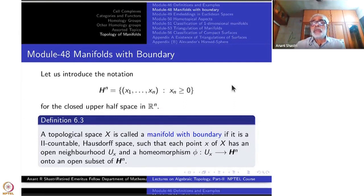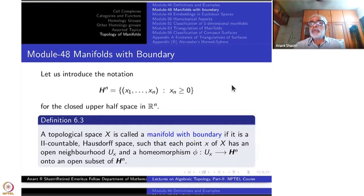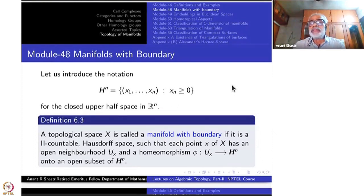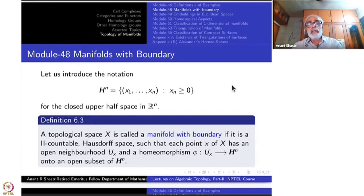Being a subspace of R^n, a subset of H^n is open if it is the intersection of an open subset of R^n with H^n. So if I take an open disk in R^n and intersect with H^n, it may be a portion of that open disk cut off by the hyperplane, namely x_n equal to 0.